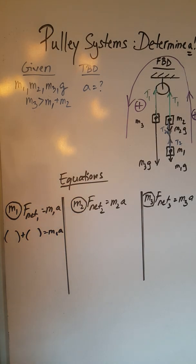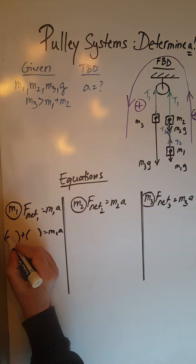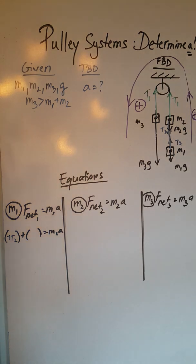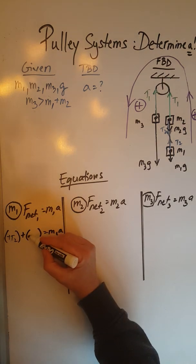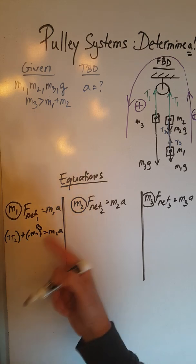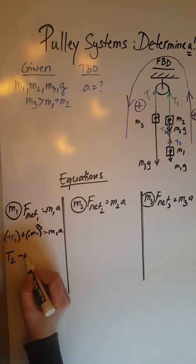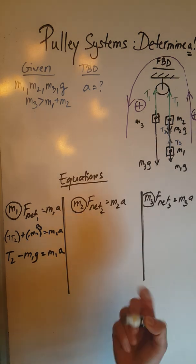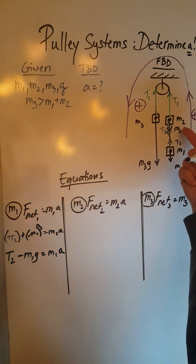So when I plug those in here color-coded, T2 is positive in blue, M1G is negative in black, and I simplify this. I'm going to get T2 minus M1G equals M1A.